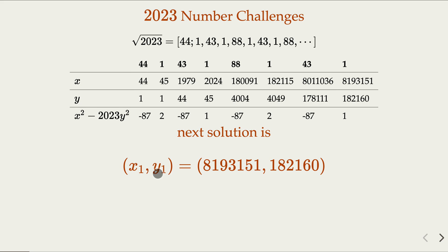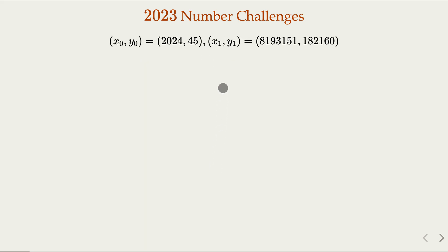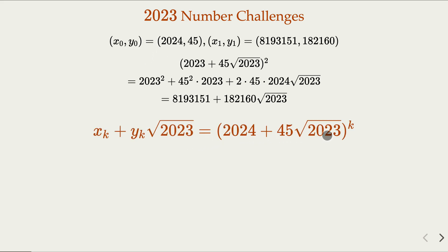We learned that all solutions are related to the fundamental solution by that equation. We have two solutions here: the fundamental solution and a second solution. If you square the fundamental solution, you expand it out, what you get is a squared plus b squared, this is 45 squared times 2023, plus 2ab. You combine the terms, and indeed, the coefficient here is the second solution. All the solutions are related to the fundamental solution by this power, and the coefficient is the solution. There are infinitely many of them. We solved the problem.